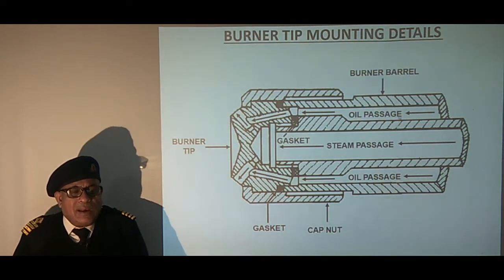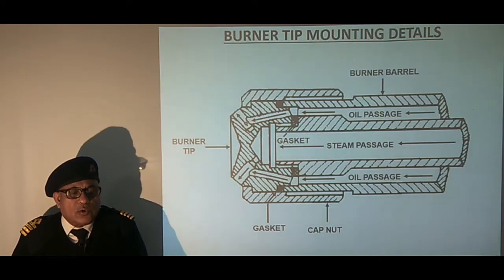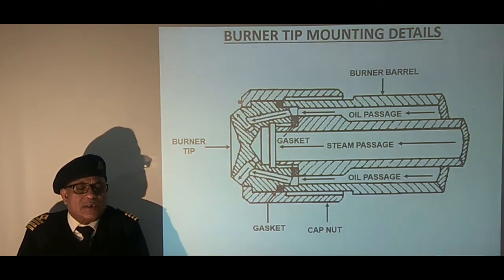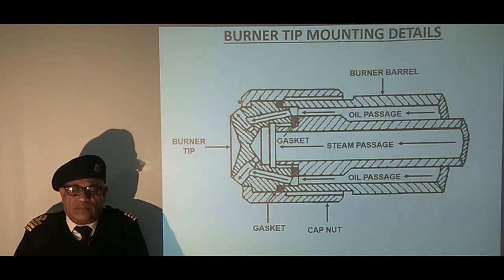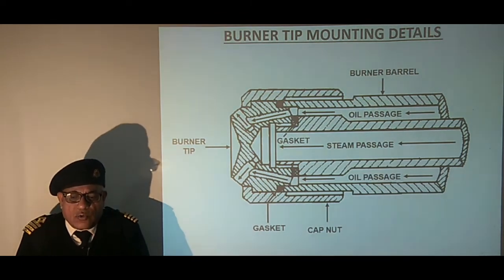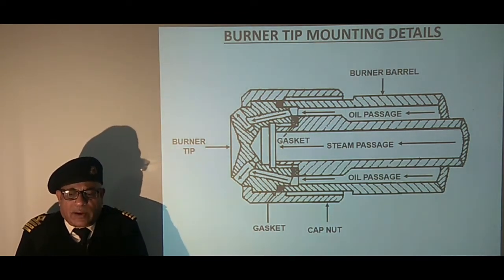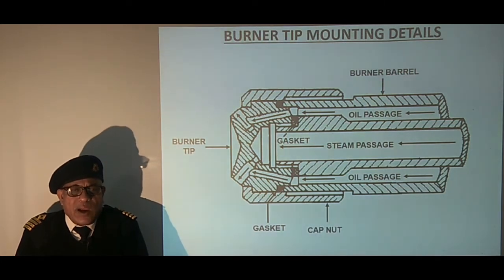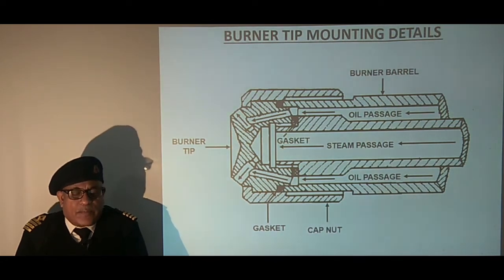The oil enters through the outer channel and goes into the nozzle where steam has already acquired high velocity, and is discharged into the furnace where it mixes with the surrounding air. This burner has a high turn down ratio of 20 to 1 and is thus able to provide a wide operating range at various loads. In comparison to the pressure jet burner, its flame is not so well defined.